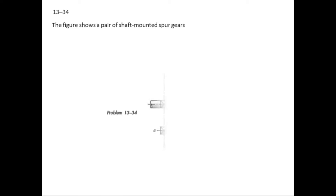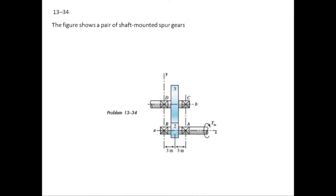In today's lecture we will be doing problem 13.34, which is related to spur gear force analysis. In this problem we have two gears: gear two and gear three. Gear two is mounted on shaft A and gear three is mounted on shaft B. There will be forces associated with these gears on the shafts, and those forces are taken by the bearings — bearings A, B, C, and D. This is the y-axis, x-axis, and the z-axis will be in and out of the page.